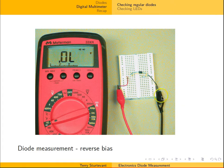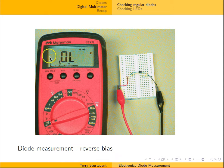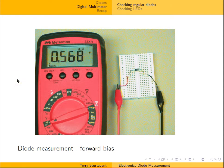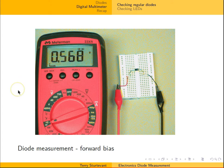Here we go with the first diode. You can see there's the cathode, so this is in reverse bias — you see that this indicates an open circuit. Now the cathode is over here, and now we see a voltage. It says 0.568 volts.